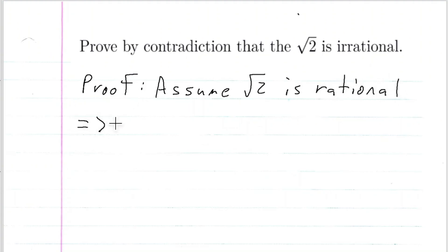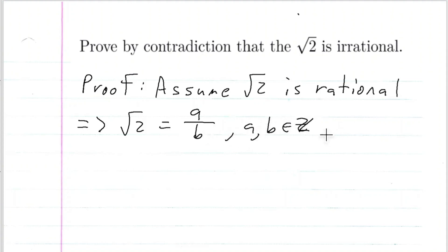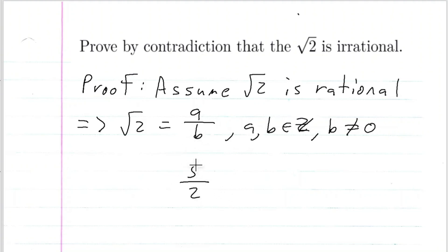The definition of a rational number is that the square root of two can be represented as an integer divided by an integer, where A and B are integers and B cannot be zero. For example, three over two is a rational number — it's an integer over an integer. Even three is a rational number because it can be represented as three over one.